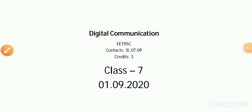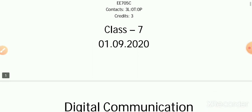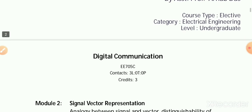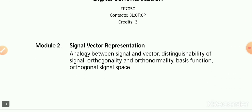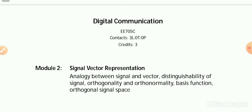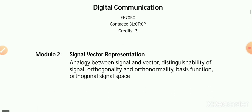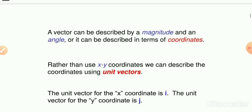Hello students, we come together again for discussing digital communication. The paper code for the subject is EE705C. I am Arnab Das. Today we discuss Module 2, entitled 'Forms of Signal Vector Representation,' with the sub-module on the analogy between signal and vector. We also discuss distinguishability of signal, orthogonality and orthonormality, basic function, and orthogonal signal space.